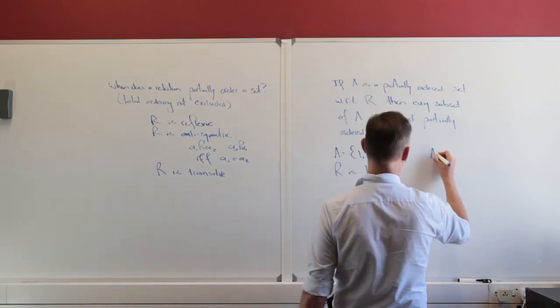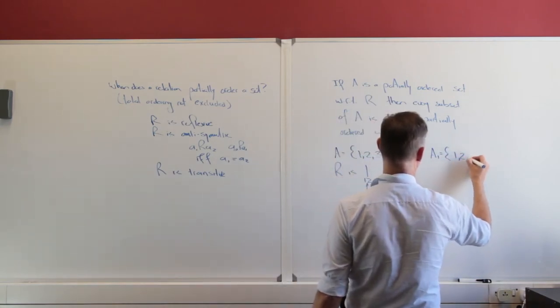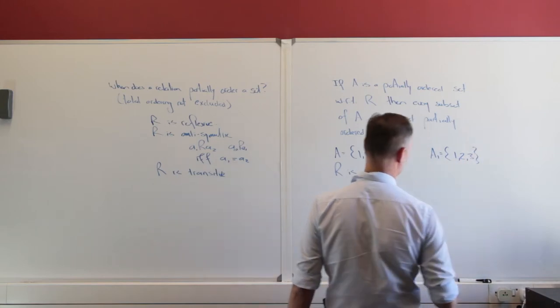So that we do have that partial ordering because let me take one subset, a sub 1 and if a sub 1 is 1, 2, 3, well what do I have?